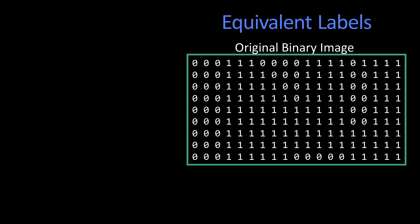So let's start with a picture that looks like this. We've got ones and zeros, and if you look carefully you'll see there's really only one object here. Those are all the ones.